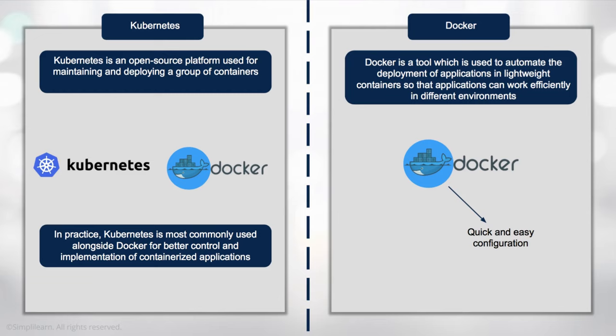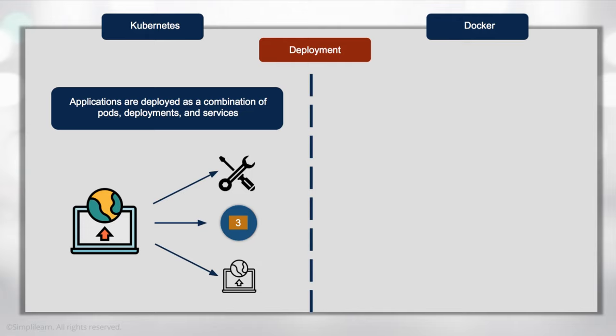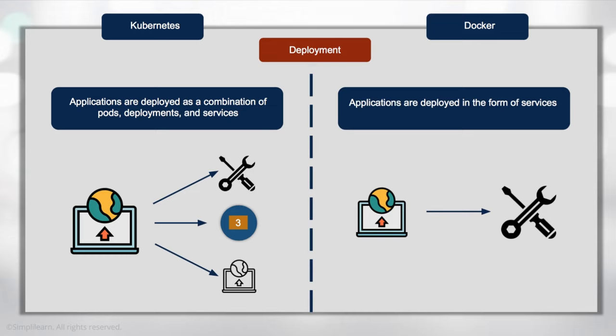Looking at deployment differences between the two: Kubernetes is designed around a combination of pods and services, whereas Docker is about deploying services in containers. Kubernetes manages the entire environment — within each pod you have all your containers, and those containers control the services that power the applications being deployed.